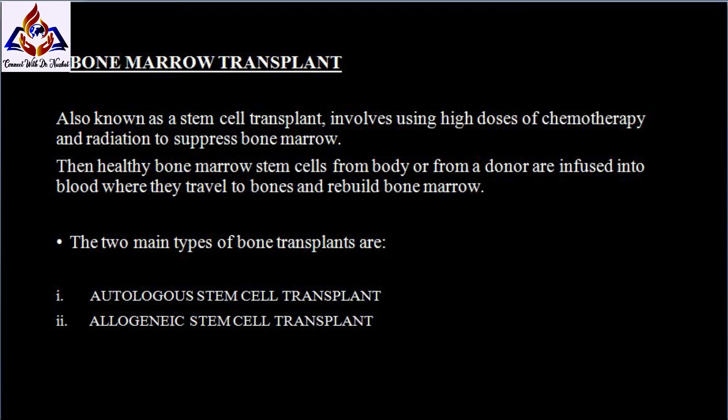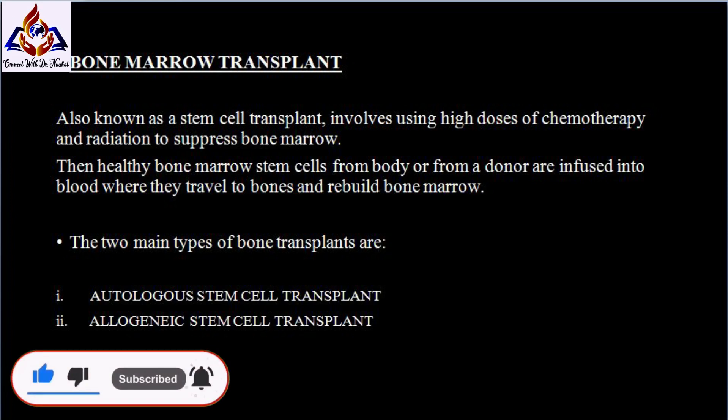The two main types of bone marrow transplant are autologous stem cell transplant and allogeneic stem cell transplant. In an autologous stem cell transplant, your own stem cells are collected before treatment and stored until after you receive high-dose chemotherapy or radiation; the bone marrow cells are then put back into your body. In an allogeneic stem cell transplant, stem cells from a donor — usually a close relative — are transplanted into your body.